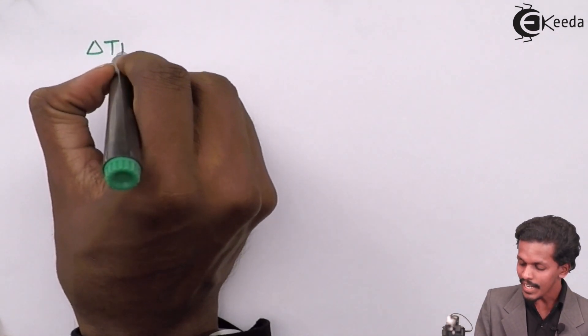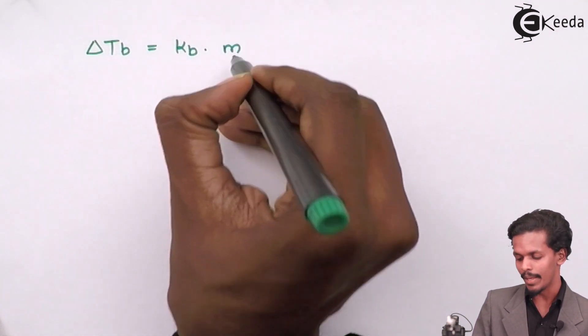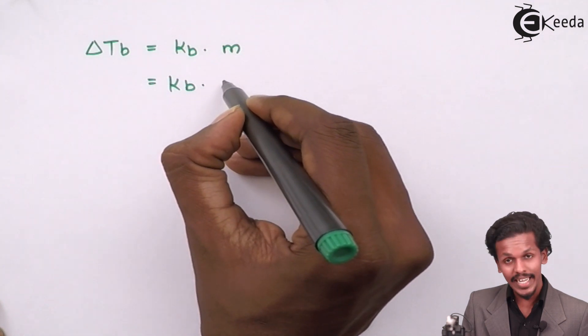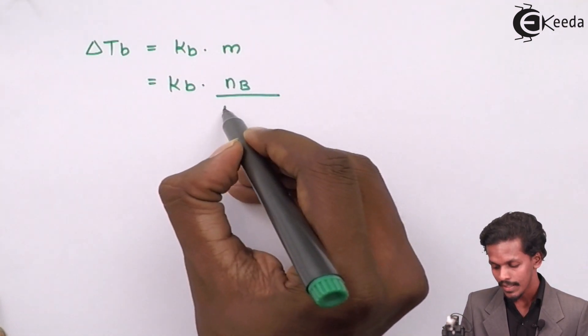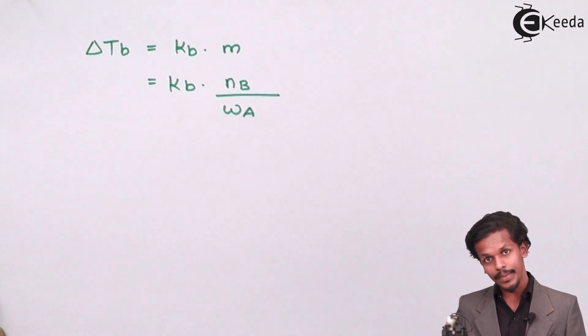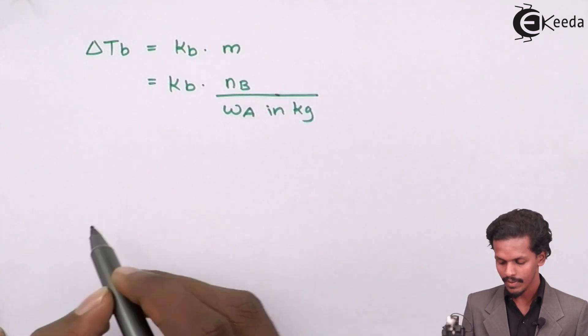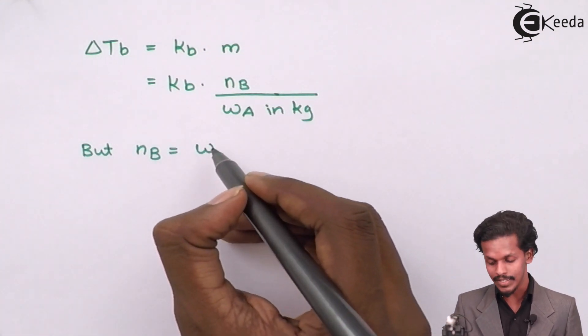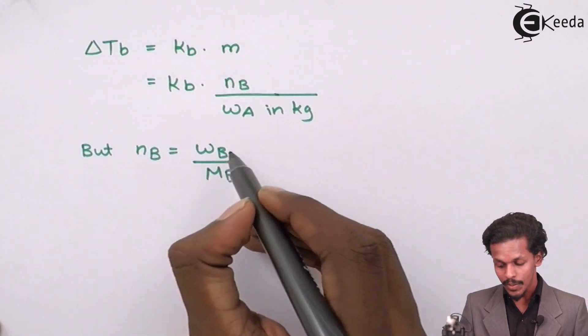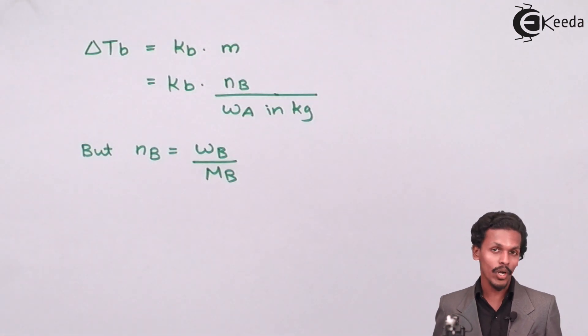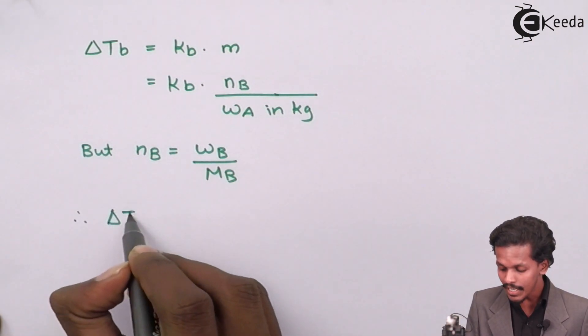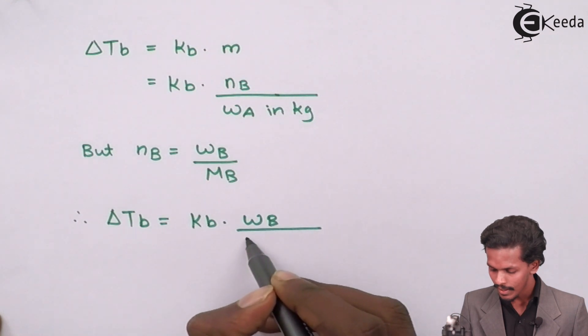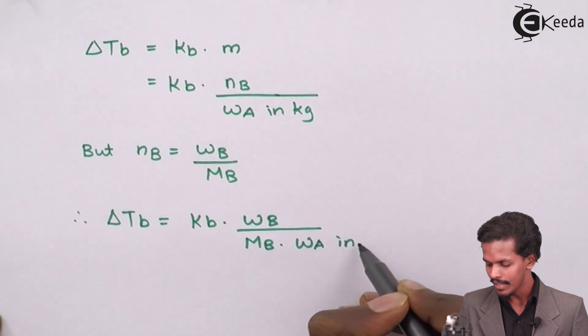Since delta Tb equals Kb into small m, and small m is molality, therefore delta Tb equals Kb times number of moles of solute divided by weight of solvent in kg. But number of moles of solute is weight of solute divided by molar mass of solute. Substituting this value, delta Tb equals Kb times Wb divided by Mb times Wa in kg.